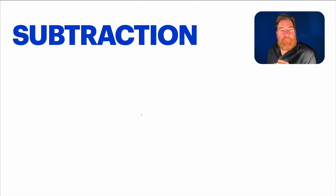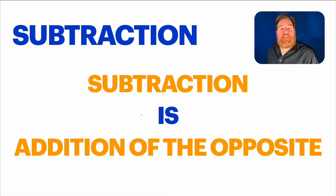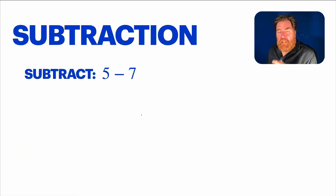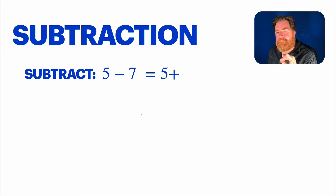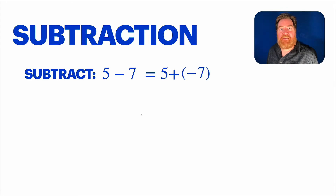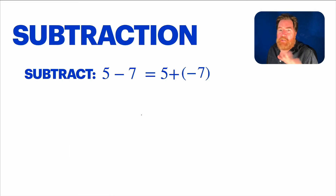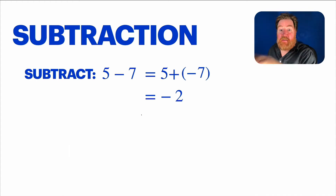Let me clarify what I meant by subtraction is really addition. Specifically: subtraction is really addition of the opposite. So how does that play out with numbers? Let's say you wanted to subtract five minus seven. Well, subtracting seven is the same as adding the opposite of seven. The opposite of seven is negative seven. So we'll do this problem: five plus negative seven. Who's going to win? Negatives. By how many? Two. Game over. The key thing is subtracting seven is the same as adding the opposite of seven — namely negative seven.